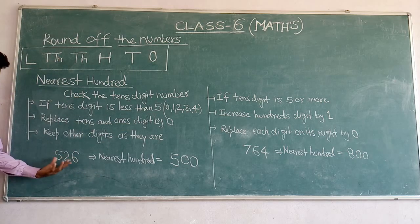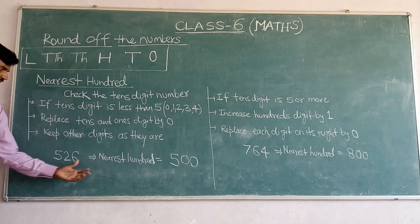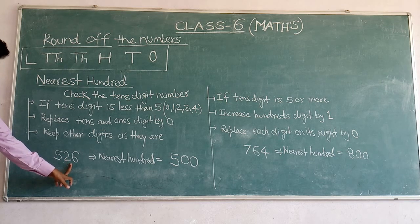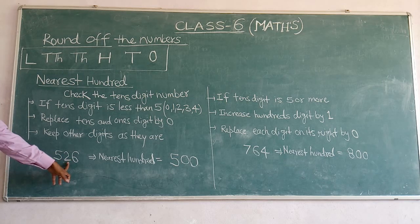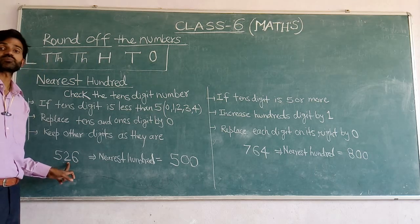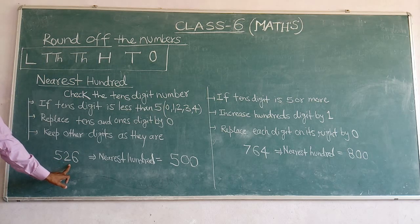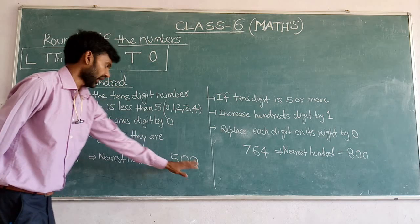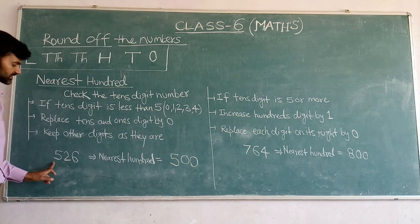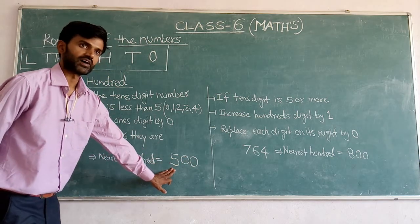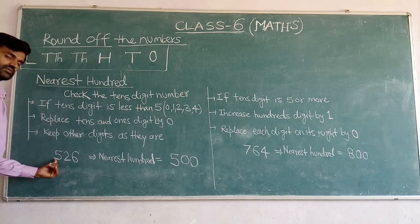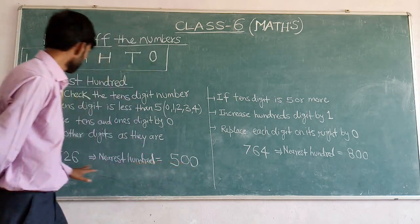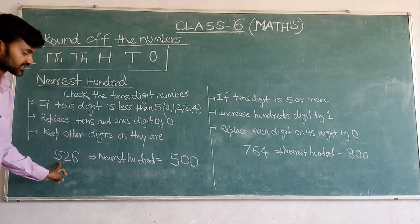For example, the number 526. We have to find the nearest 100 of this number. First, check the tens digit — it is 2, which is less than 5. If the tens digit is less than 5, replace the tens and ones digits by 0 and keep the hundreds digit as it is. So the nearest 100 of 526 is 500.